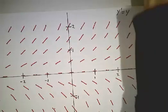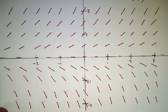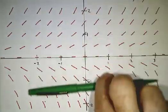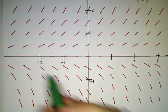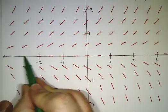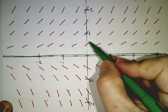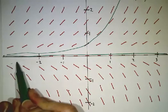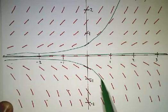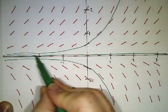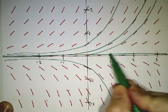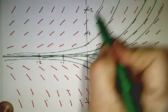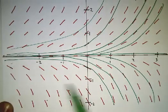Another example is the direction field y' equals y. Here, the higher up you go, the bigger slope you have; the farther down you go, the more negative the slope. There's one solution which is just y equals 0. Then there are other solutions that look like exponentials going up or exponentials going down — a whole family of solutions. You tell me where you are at time 0 and I'll tell you where you are for all future times.